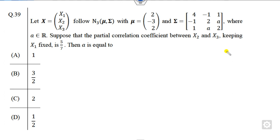Let's start with this question. It's a very simple question. You have to find the value of a so that the partial correlation coefficient becomes 5 by 7. You have to find r, the partial correlation coefficient of vector 2, 3 keeping 1 as fixed, this value is given to you 5 upon 7.